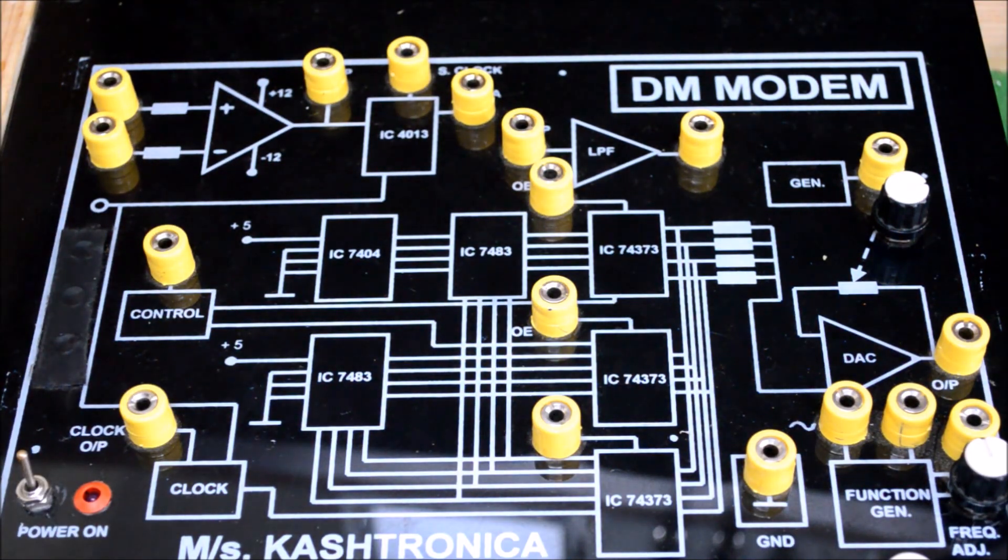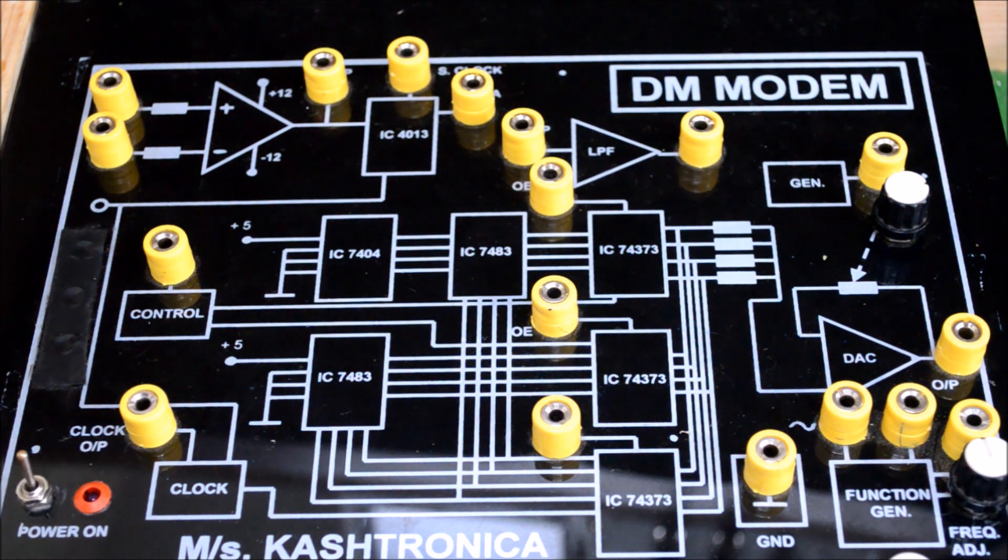The main aim of the DM experiment is to understand the process of generation and detection of DM signal. Onto the practical.